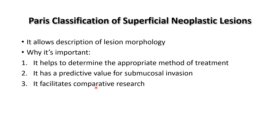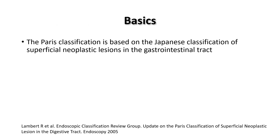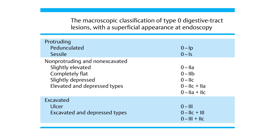The Paris classification is originally a modification of the Japanese classification, published in 2002, for lesions in the GI tract wherever they are. That is the macroscopic classification of type 0.